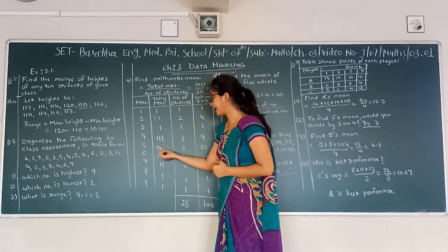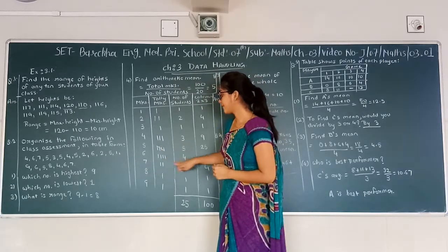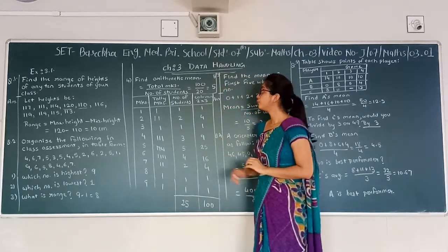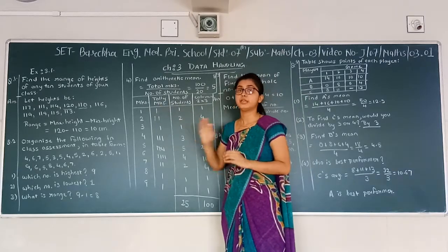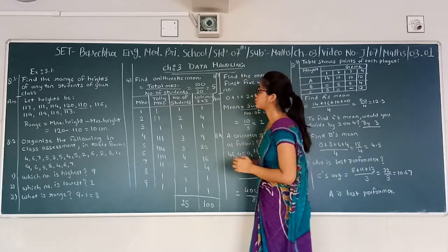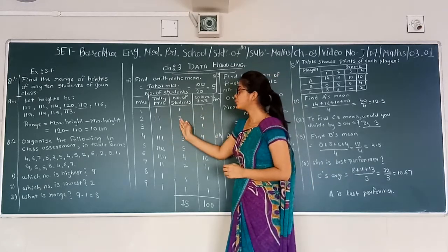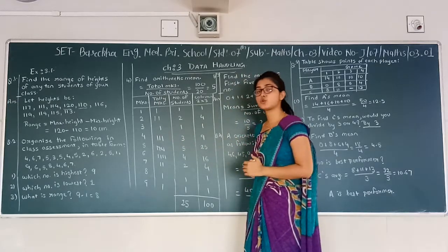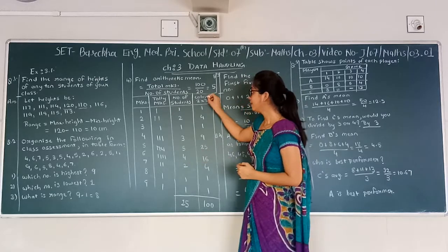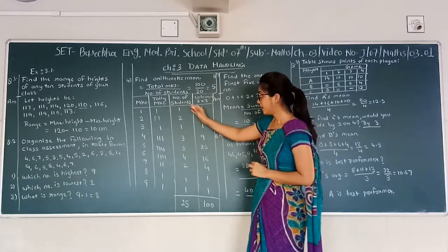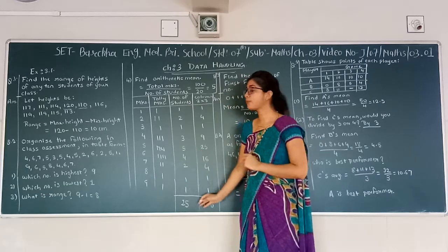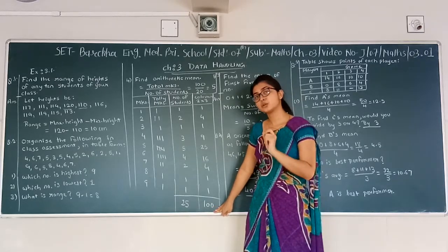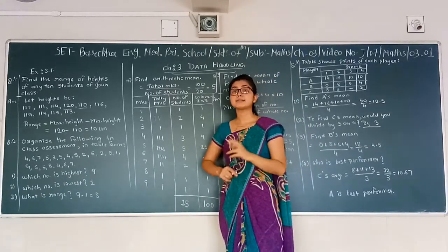Continuing the tally counts: for mark 6 it is 4, for mark 7 it is 2, for mark 8 it is 1, and for mark 9 it is 1. Now we multiply each mark by its frequency to fill column 3. So 1 times 1 is 1, 2 times 2 is 4, 3 times 1 is 3, 4 times 3 is 9, and so on. Adding the number of students gives 25 total students, and adding the product column gives 100 total marks.